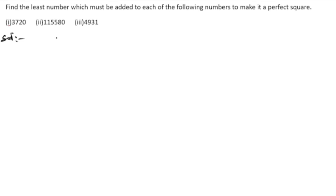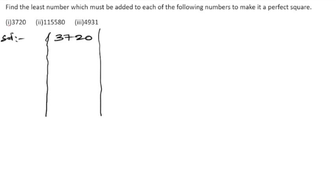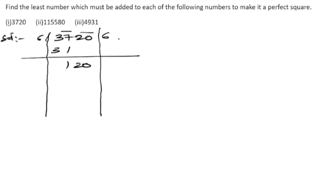In the solution, write down 3720. We will use the same division method. For 37, first we put the bars. 37 — the nearest square is 36, so six sixes are 36. The remainder is 1, and 20 comes down.